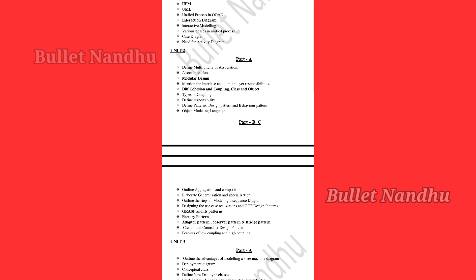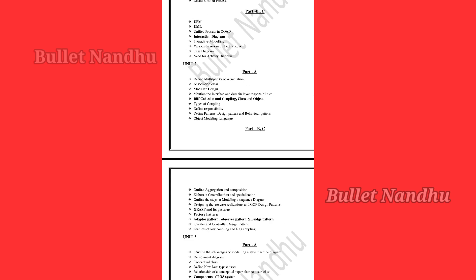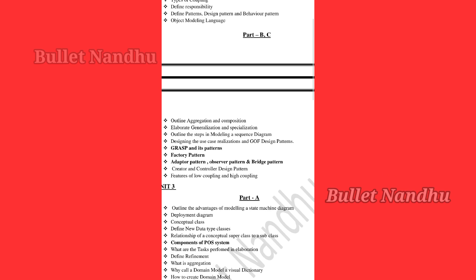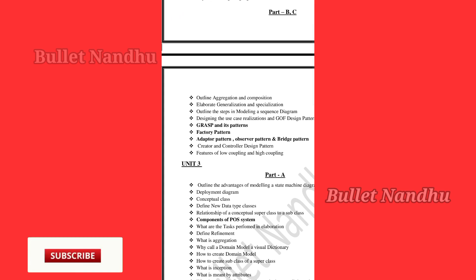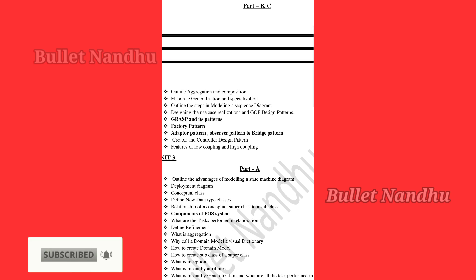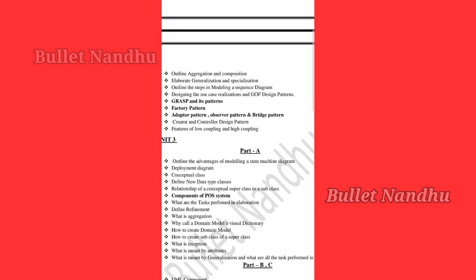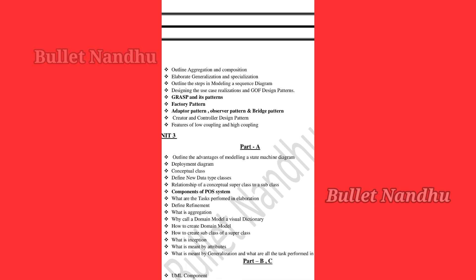Unit 2 is Modular Design. Topics include the Difference between Cohesion and Coupling, and Classes and Objects. For Part B and C, we cover GRASP patterns, Factory Patterns, Adapter Patterns, Absorb Patterns, and Bridge Patterns.